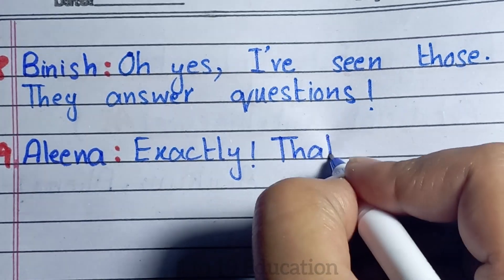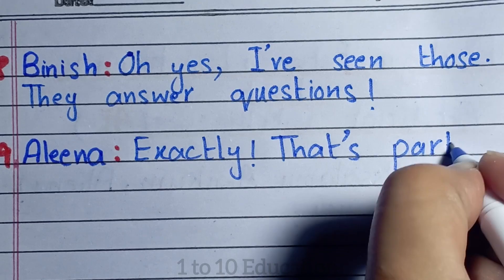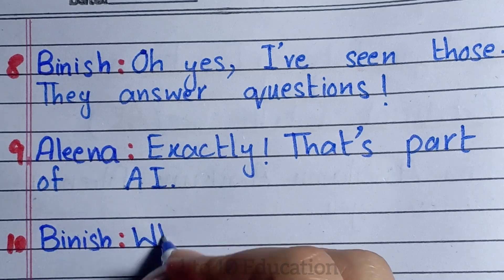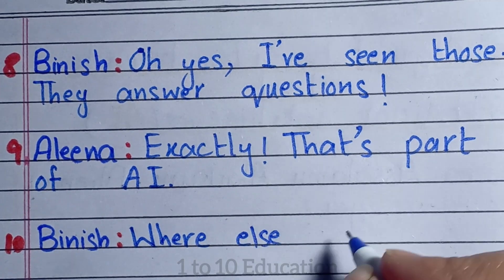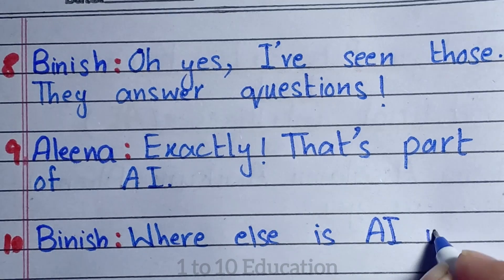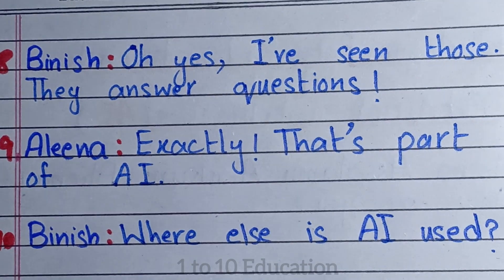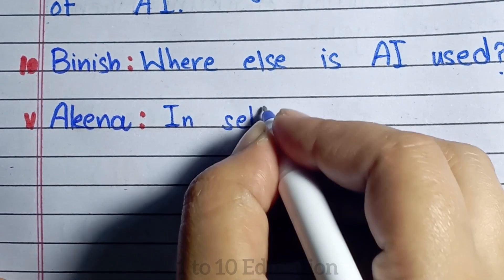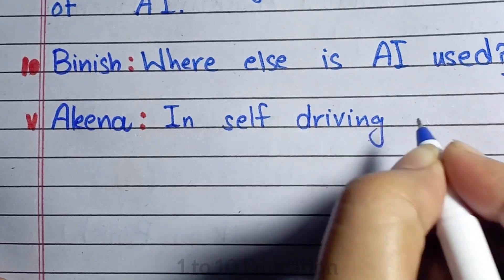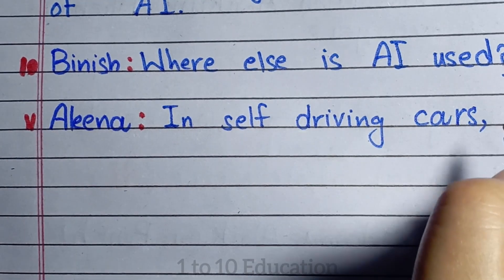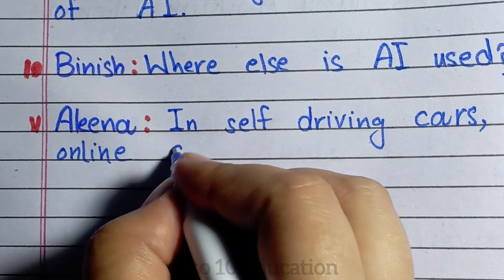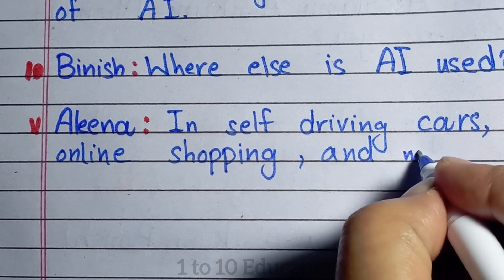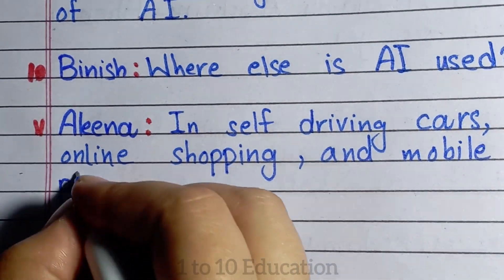Number 9. Alina: Exactly, that's part of AI. Number 10. Banish: Where else is AI used? Number 11. Alina: In self-driving cars, online shopping, and mobile phones. Number 12. Banish: That's amazing.